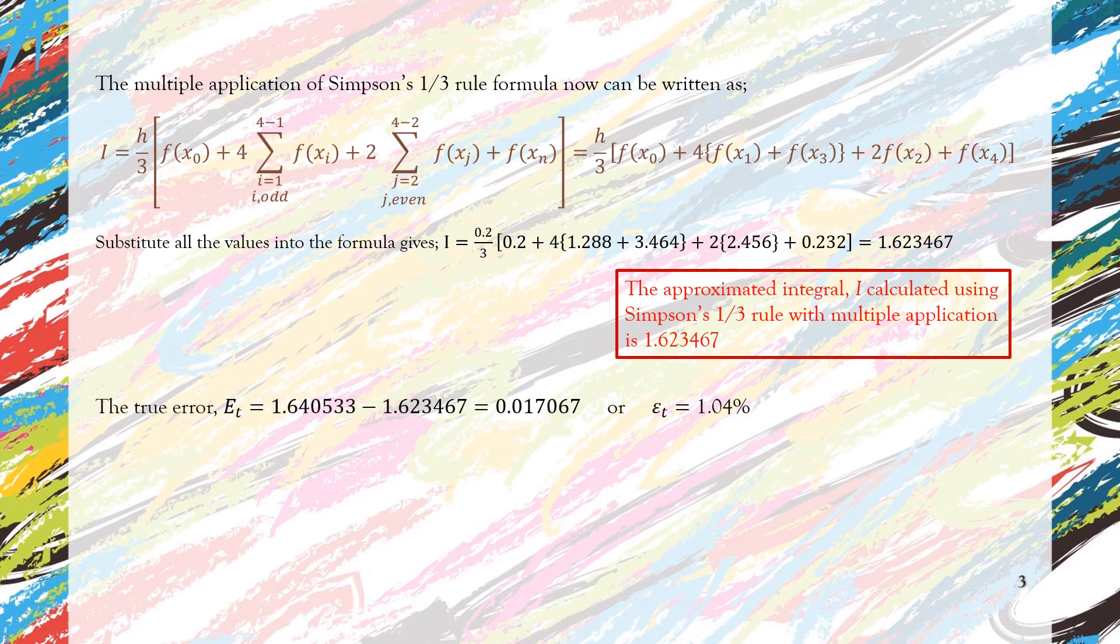Then we calculate the true error, which is very small: 0.017067, and the percentage true error is also very small, which is 1.04%. So it is quite easy to conclude that the performance is very high for Simpson's 1/3 rule multiple application when we compare to Simpson's 1/3 rule single application and also to all the trapezoidal rule.